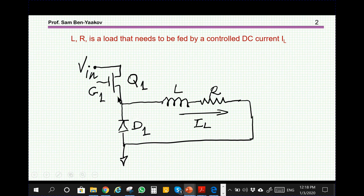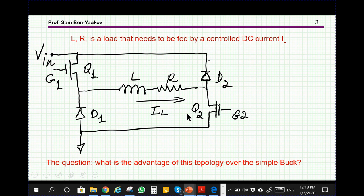One possibility is to use the buck converter. We have a transistor, a diode which will feed this load by the required current. Another possibility is to use a more sophisticated circuit having two transistors, two diodes like this. And again, this is the load. The current has to be in one direction only, and the question is what is the advantage of this topology.